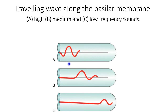High frequency sound cannot travel the full length of the basilar membrane. Medium frequency sound travels further but dies off in the middle. Low frequency sound can travel the whole length of the basilar membrane and dies off only after traveling the full length, because that part of the basilar membrane has thin, long fibers. The place theory combines the traveling wave theory with the idea of which part of the basilar membrane is stimulated by which frequency sound.